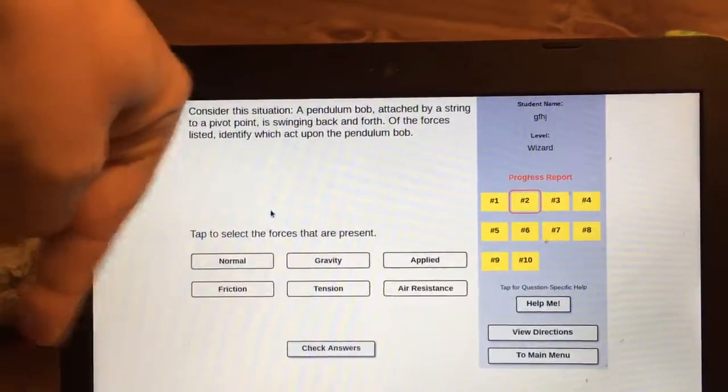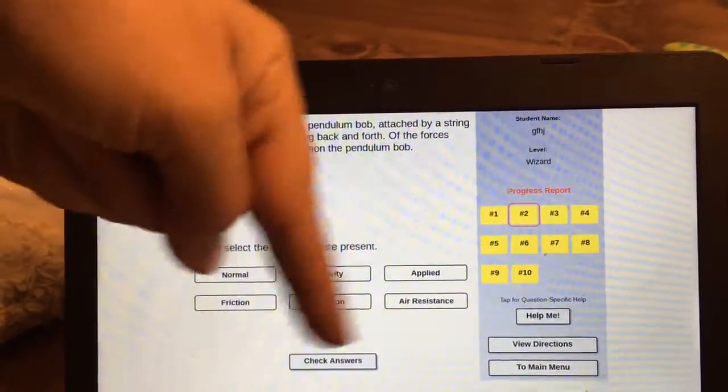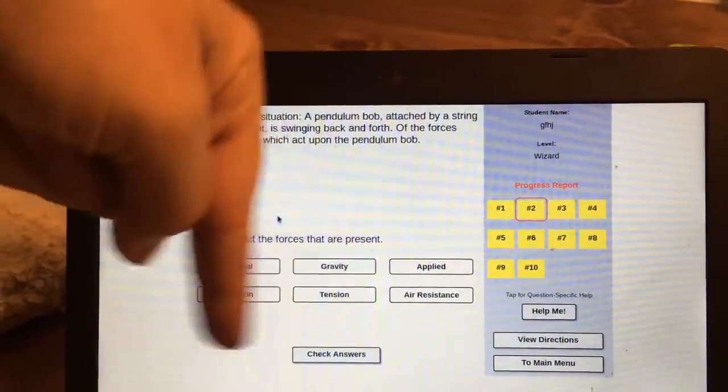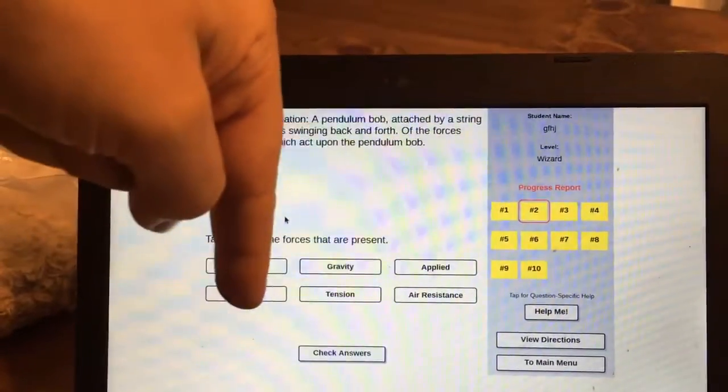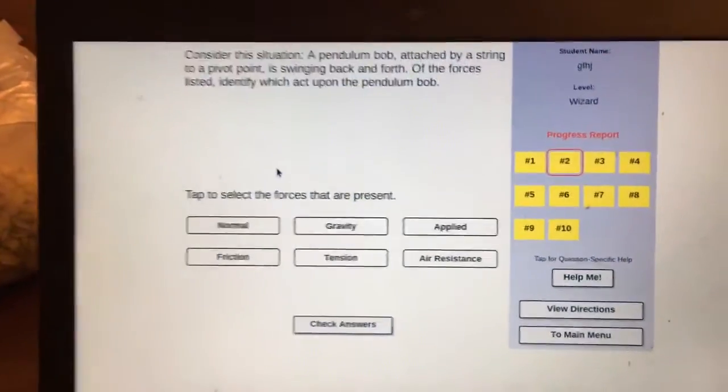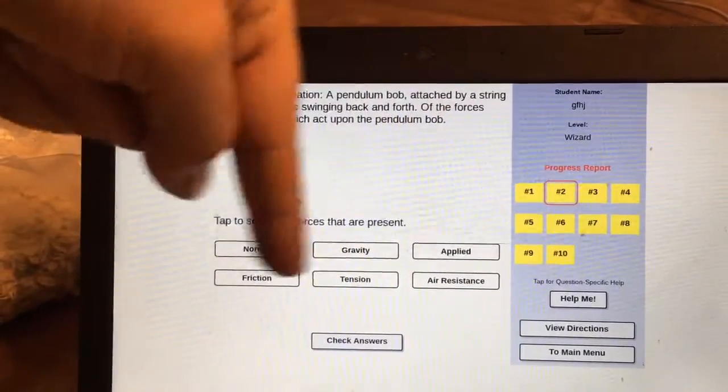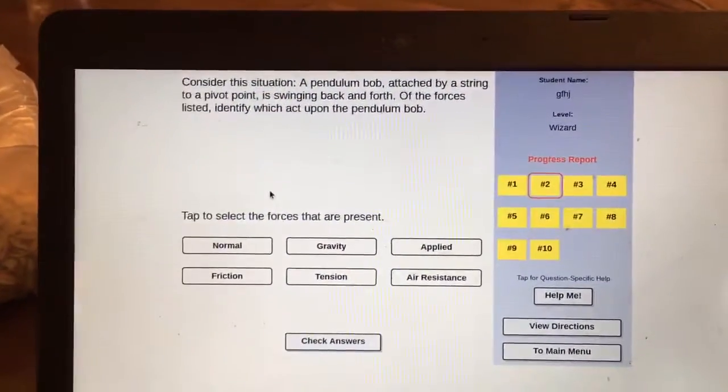So think of this would be like our plumb bob, right? Yeah, plumb bob except it's swinging. Something that hangs straight down. You got that? All right. So something swinging back and forth, think about that. It's gonna be on a string, so tension.